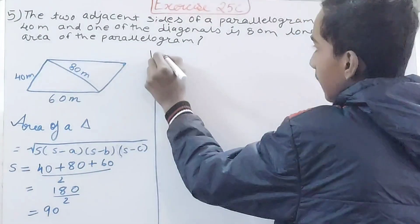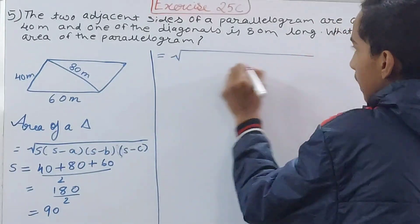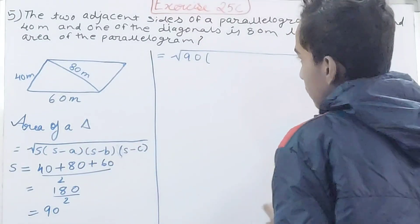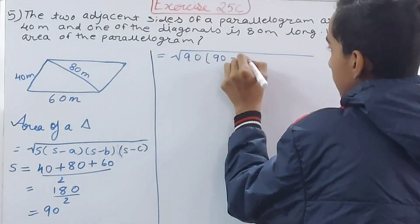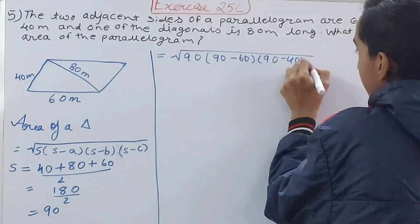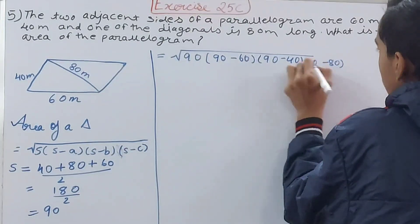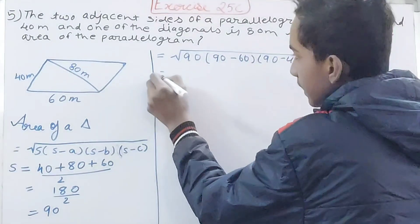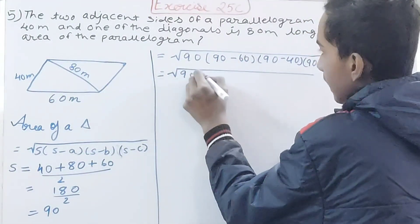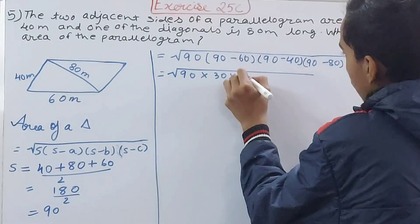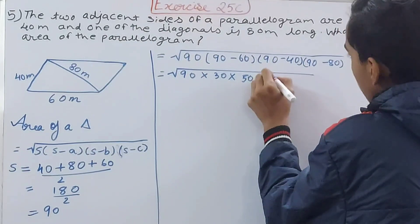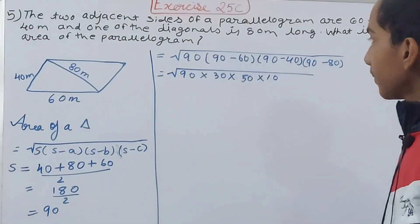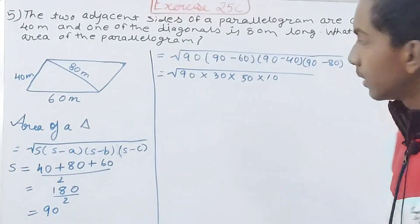Now the area of the triangle - calculate that. Root of first 90, then we have 90 - 60, then 90 - 40, and then 90 - 80. Let's solve this thing. 90 × 30 × 50 × 10 is what I get after opening the brackets and subtracting.